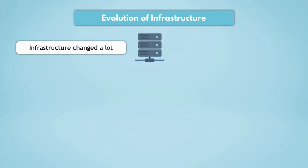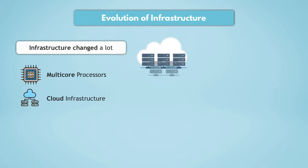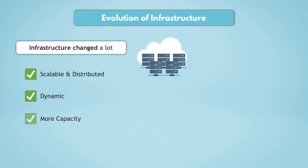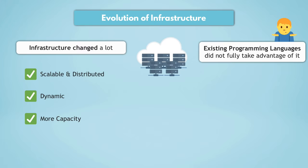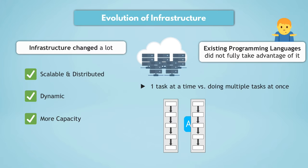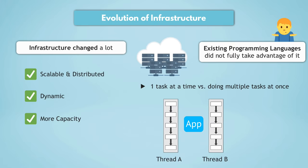The infrastructure where applications were deployed changed a lot in the last few years. Multi-core processors became common, and using cloud infrastructure with hundreds or thousands of servers became pretty universal. So infrastructure became much more scalable, dynamic, and had more capacity. However, most languages couldn't help in writing applications that would take advantage of these infrastructure improvements. You had applications that would execute one task at a time in order, but with infrastructure improvements, it was now possible to write applications that execute tasks in parallel — doing multiple things at once — making applications faster and more user friendly.